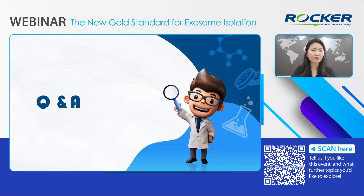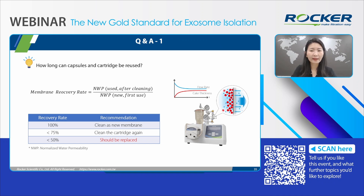That concludes the presentation. Let's now move to the Q&A session — I will take up to three questions. First question: how long can capsules or cartridges be reused? The efficacy of the membrane is evaluated using the normalized water permeability test, the NWP test, which measures water flow at first usage and after cleaning to assess membrane clogging. The more clogged the membrane, the slower the flow rate. If the recovery rate falls below 75%, additional cleaning is recommended. If it drops below 50%, replacement is advised.